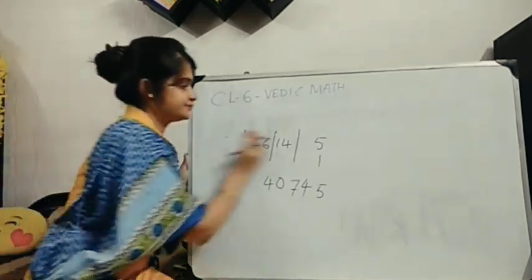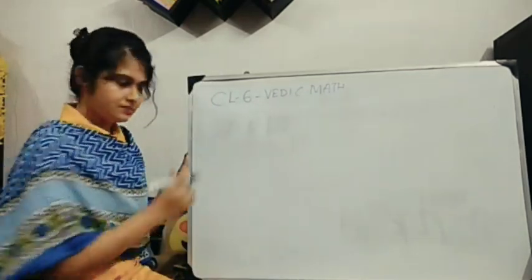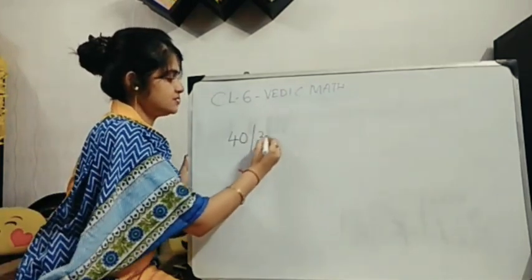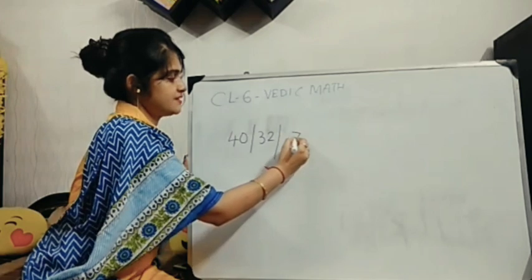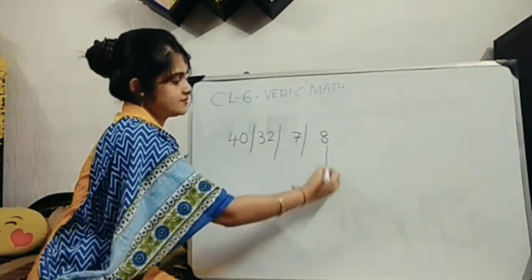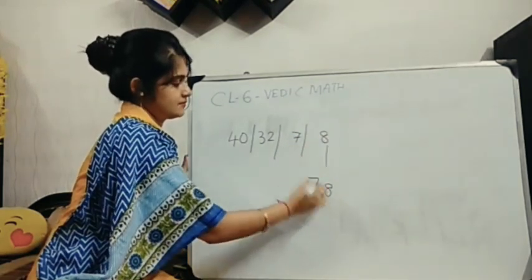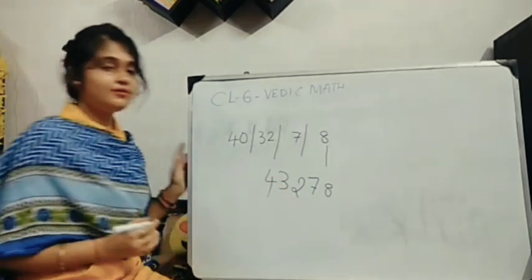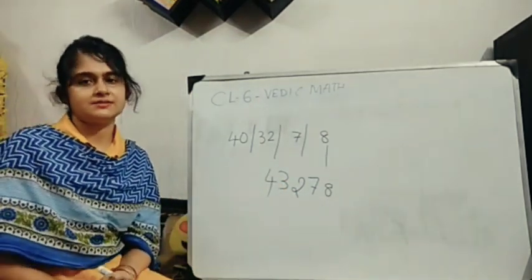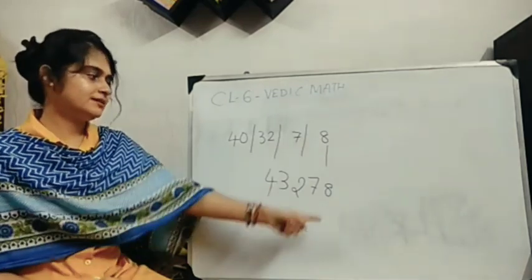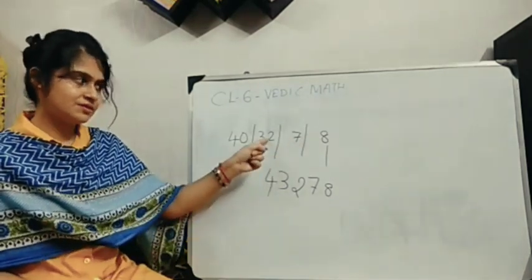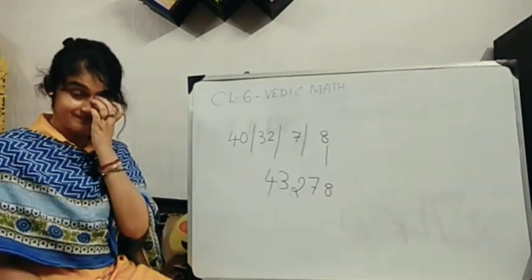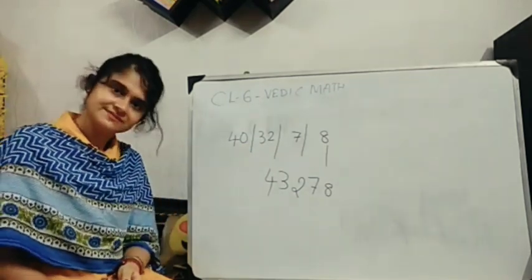One more I will show you. I will check my number. 40, 32, 32, 7, 8, 4, 3, 2, 7, 8. Check it. 8 down, 0 here, 7 down, 0 here, 2 down, 3 here, 3 down, 4 down. Nothing is left. Clear?